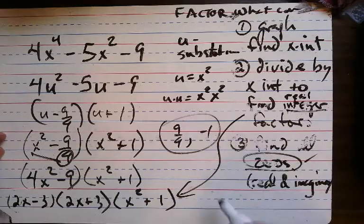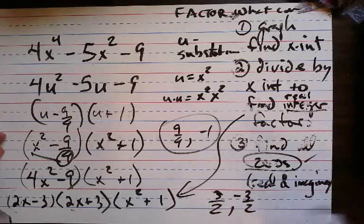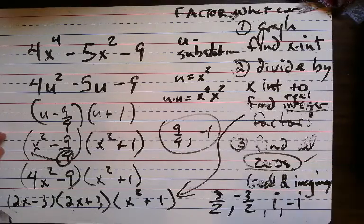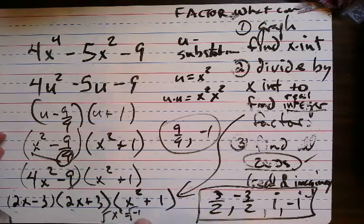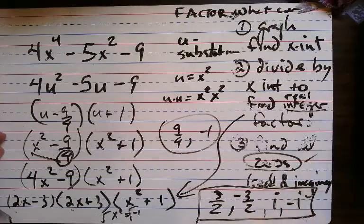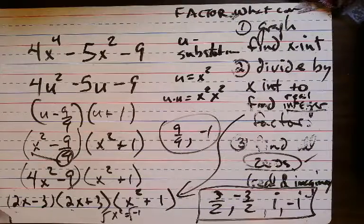So what are the answers? This one gives x equals 3/2, that one gives x equals negative 3/2. This one — x squared plus 1 equals 0, so x squared equals negative 1, and the square root of negative 1 is i. So x equals i and negative i. We got four answers just like we wanted. That'll do it for today. Bye.